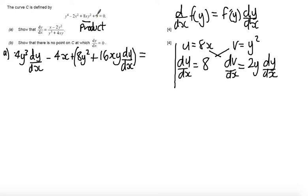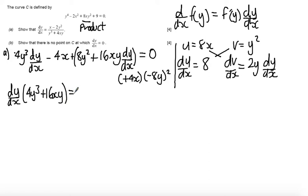So 9, differentiated, is a constant, so it disappears, so this is all equal to 0. Now at this point I want to collect all the terms in dy by dx, but I also want to take all the terms that don't have dy by dx over to the other side. So I'm going to add 4x to both sides of the equation, and I'm going to subtract 8y squared from both sides of the equation, so that on the left-hand side, factorising the dy by dx out, I get dy by dx times by 4y cubed plus 16xy.